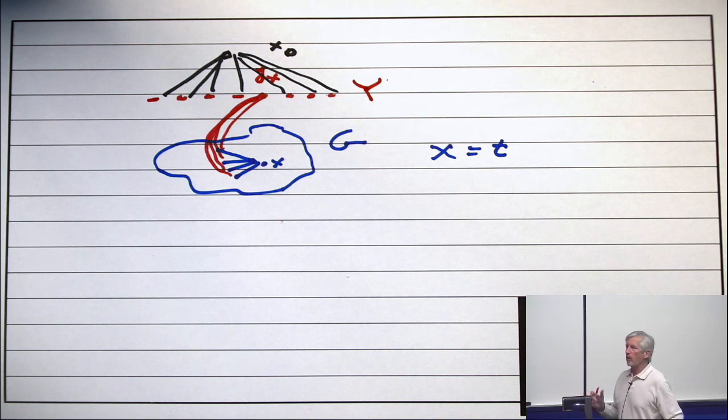So, if you started with m vertices, your new graph has exactly 2m plus 1 vertices. Is the construction clear? It's pretty simple.